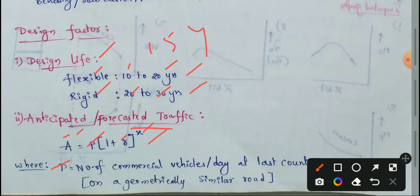X means the number of years between the last count and the end of the design life of the pavement.